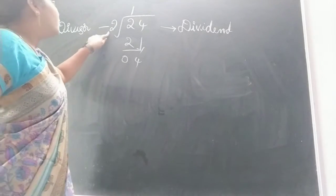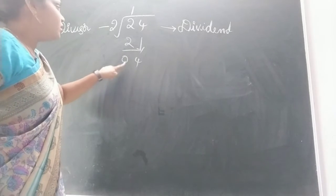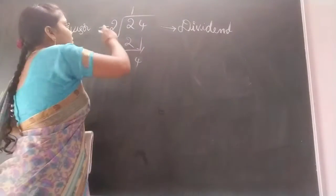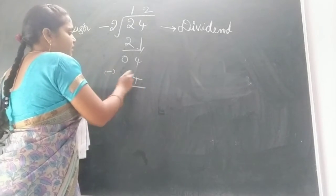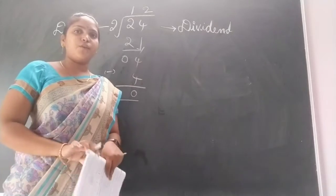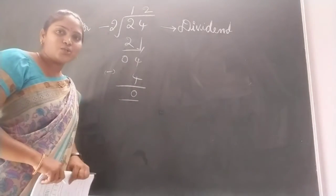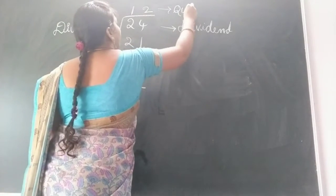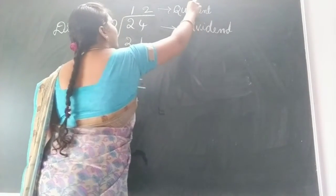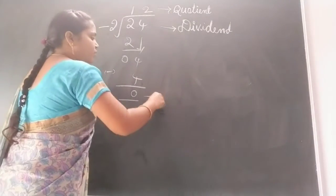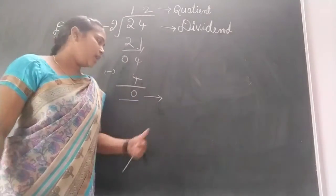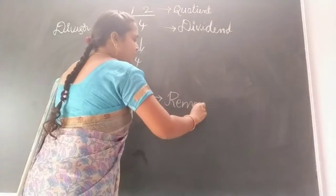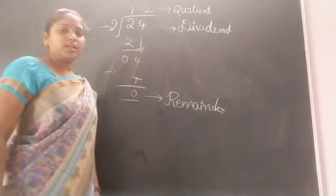Now, 2 ones of 2. Bring down this 4 — here 4 is the new dividend. Now, 2 twos of 4 is 4, means 4 minus 4 is 0. So what is the quotient here, children? The answer of the division sum is called quotient. So here 2 is called quotient. The number left over after division is called remainder. So here 0 is the remainder.